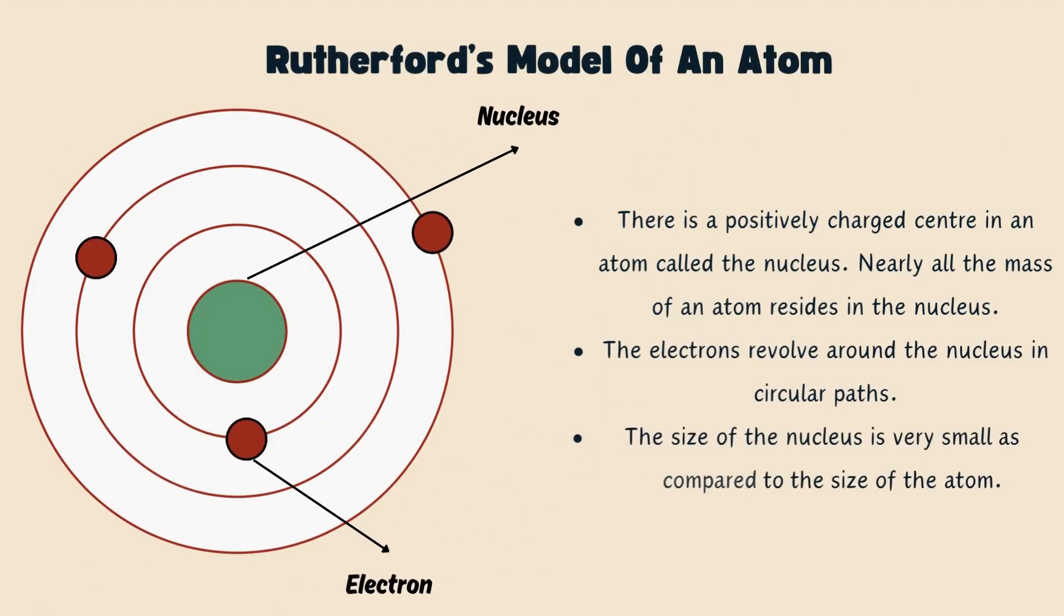Next came Ernest Rutherford's model of atom. He conducted an experiment by making fast moving alpha particles fall on a thin gold foil. Alpha particles are doubly charged helium ions. This alpha particle scattering experiment concluded that most of the space inside the atom is empty because most of the alpha particles passed through the gold foil without getting deflected. Very few particles were deflected from their path indicating that the positive charge of the atom occupies very little space.